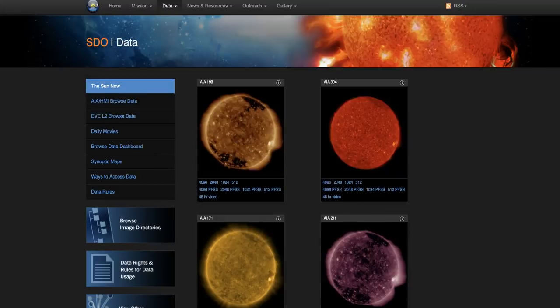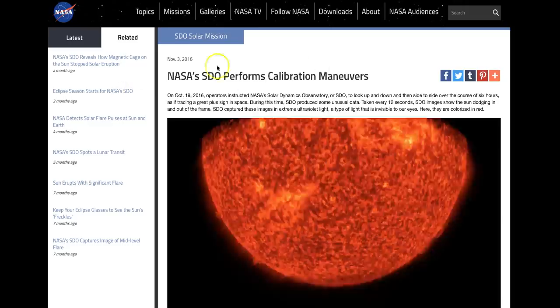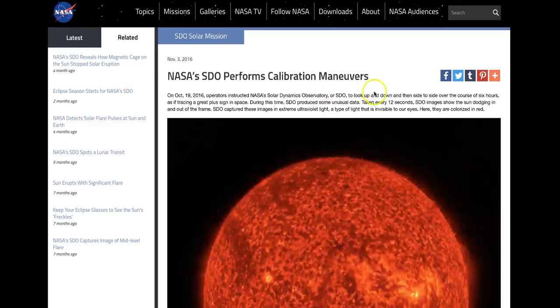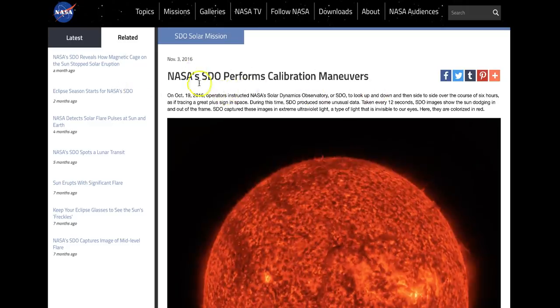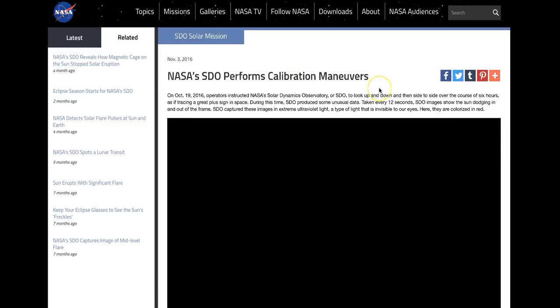But it is not flipping. I just want to let you guys know, this is just a little tutorial video on this instrument and what it does. Every so often it calibrates, does a what's called a roll maneuver, and it does make it look like the Sun is rotating.